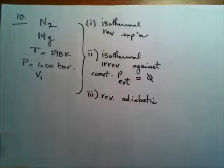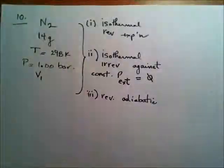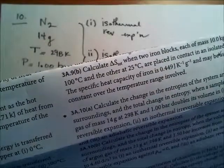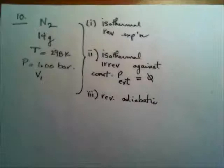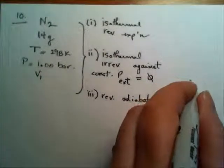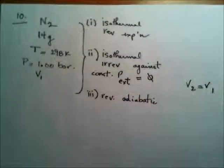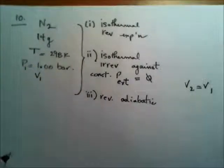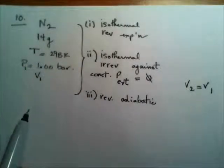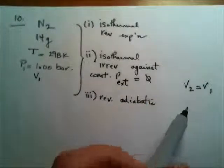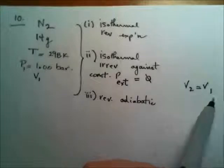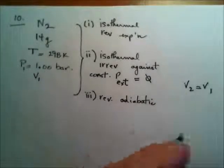And the third is reversible adiabatic. Now, do we know anything about the expanded state? It doubles its volume. That's all we know. V2 is V1. It's isothermal, so I know that T2 is T1. I didn't mean to put V2 equals V1. It says it doubles.